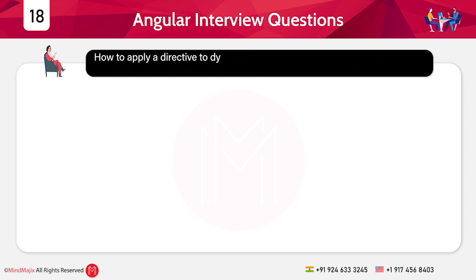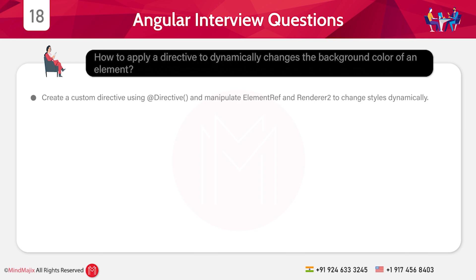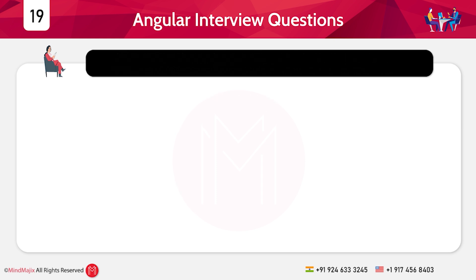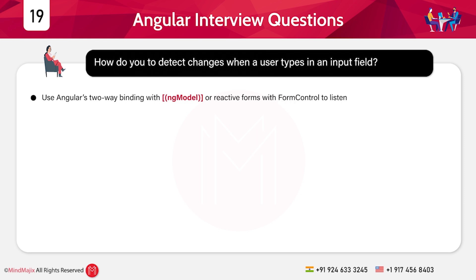The eighteenth question: How do you apply a directive to dynamically change the background color of an element? The nineteenth question: How do you detect changes when a user types in an input field? Use Angular's two-way binding with ngModel, or reactive forms with FormControl to listen to the changes.